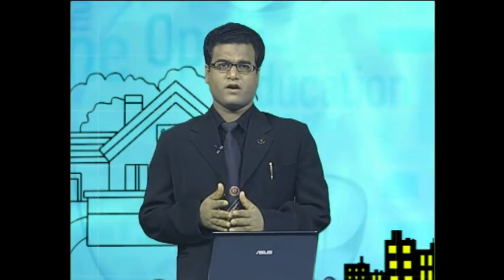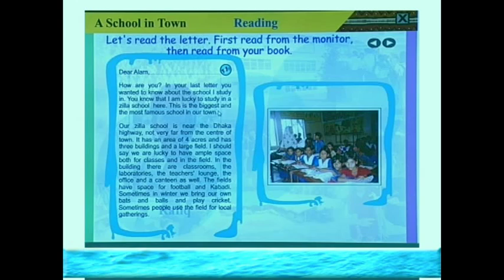Rafik said that he studies in a Zala school. The area of Zala school is four acres — that means 12 bighas, since three bighas equals one acre. So it is a large area. The school has ample space both in the classrooms and in the field. Rafik said they usually play kabadi, football, and various games. In winter, they take their own bats and balls and play cricket. The school is located beside the Dhaka-Chittagong highway, not very far from the center of the town.